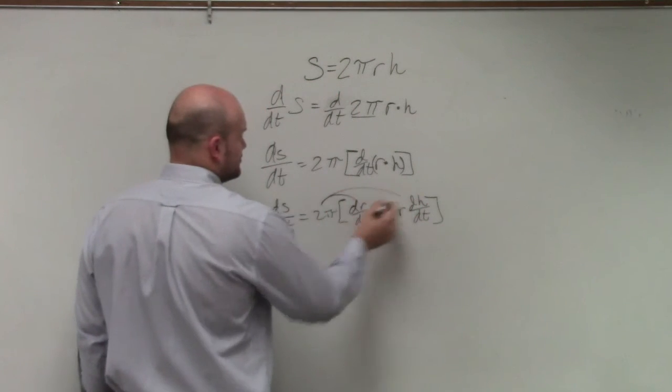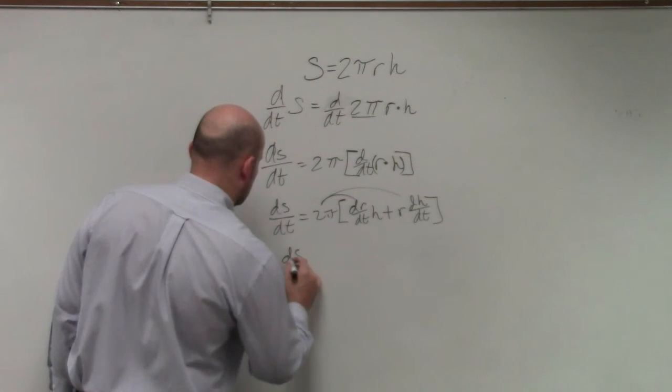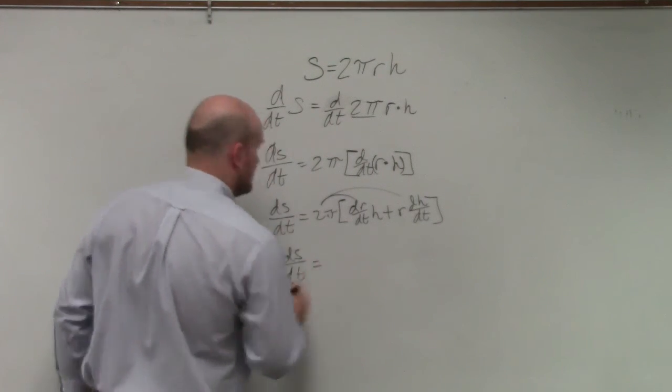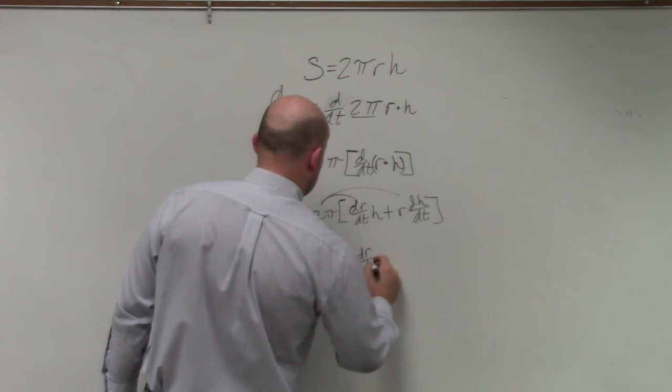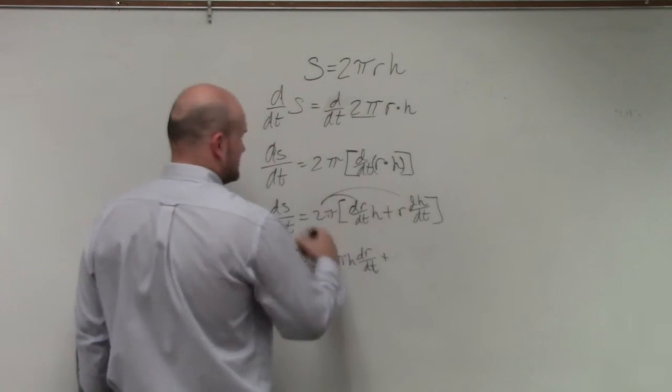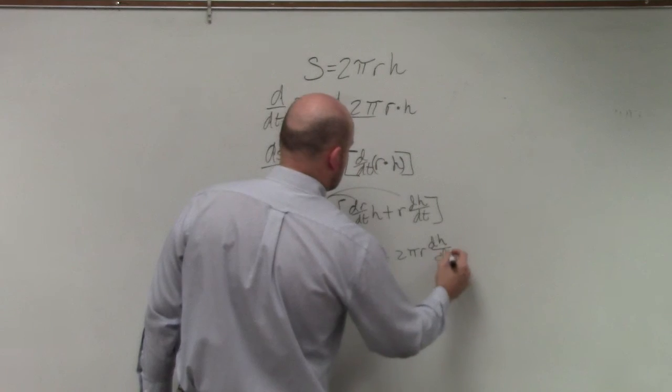Now I can distribute that back in, or you could just do it all together. I just break it up so everybody can see. ds over dt equals 2πh dr over dt plus 2πr dh over dt.